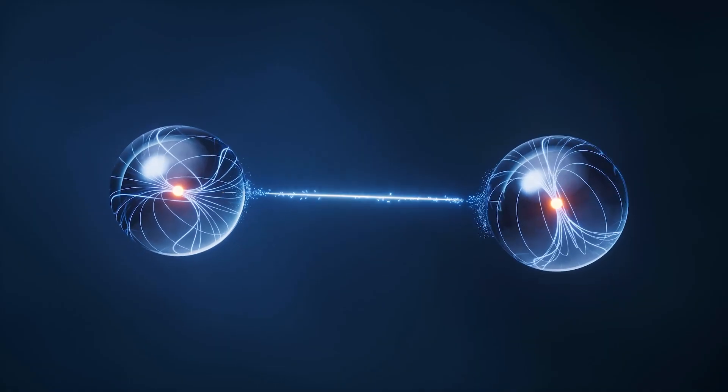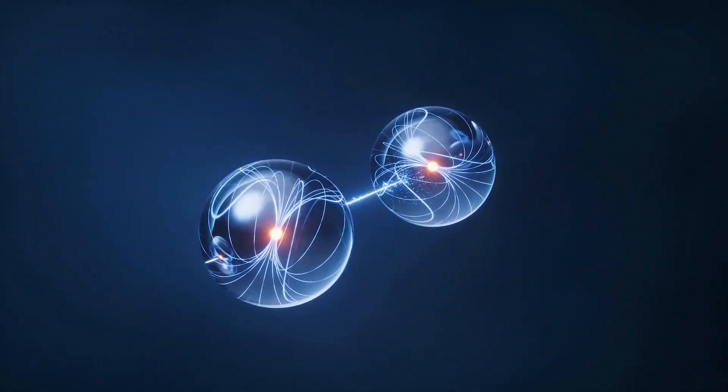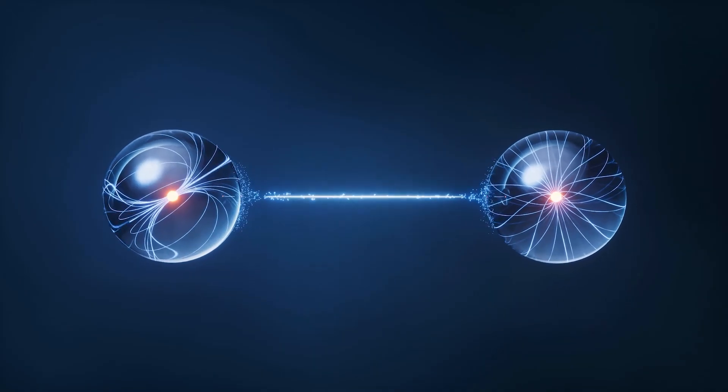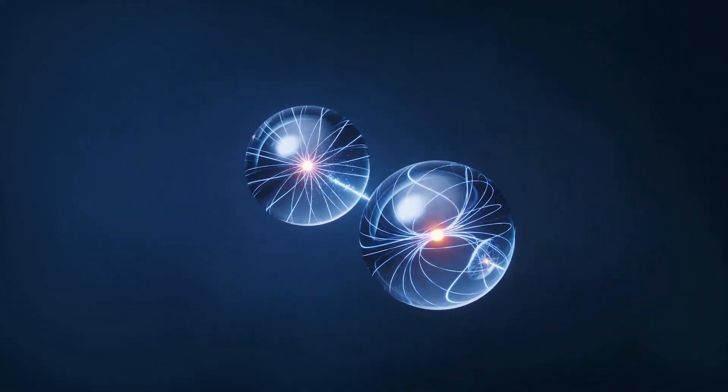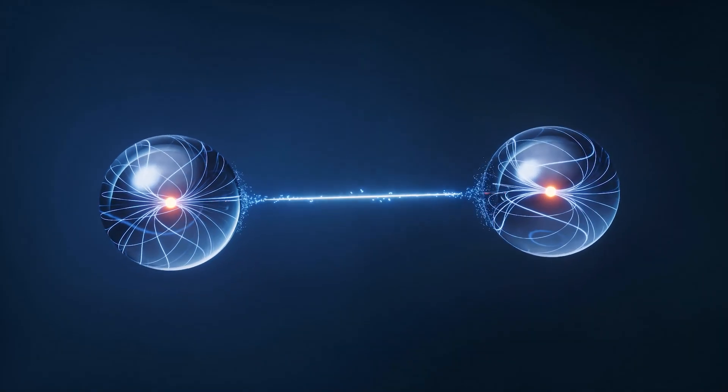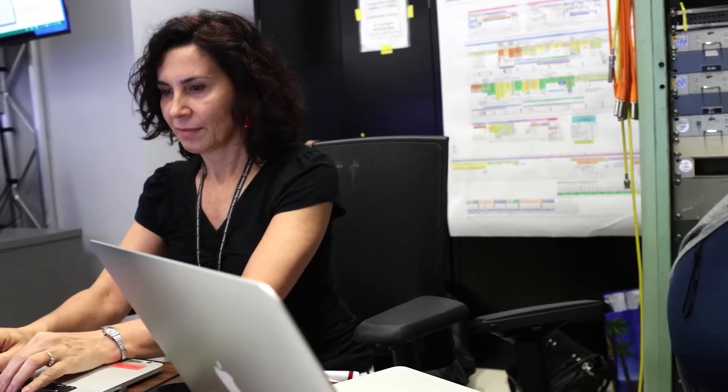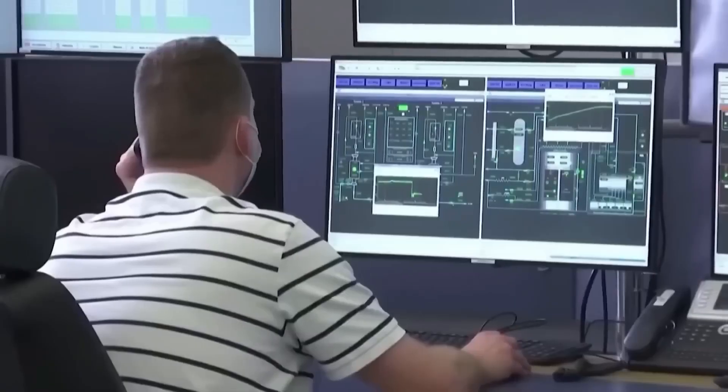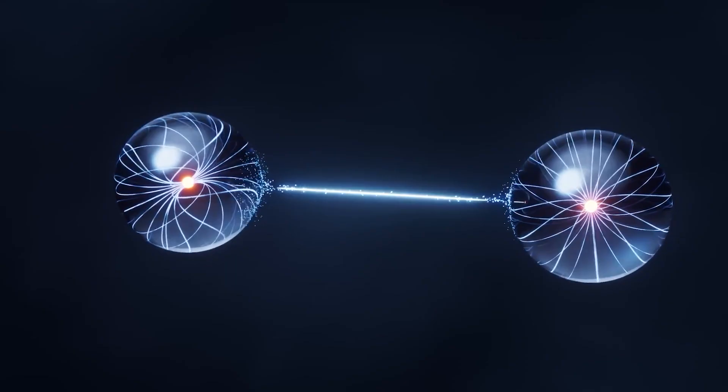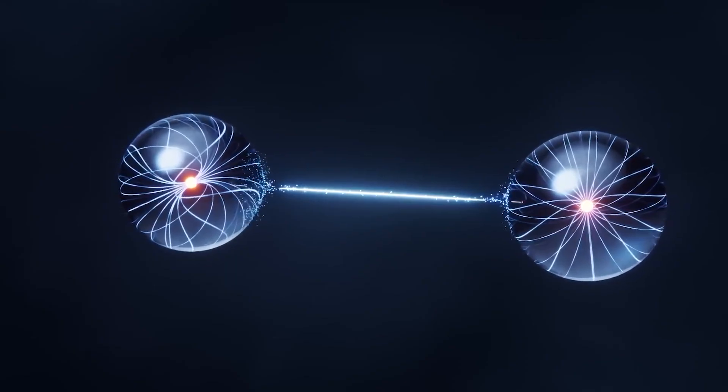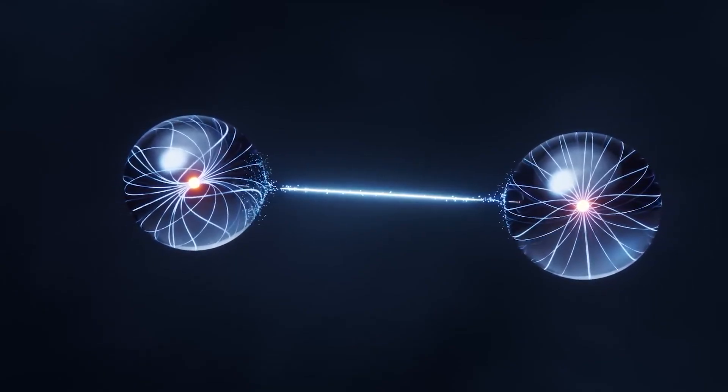It was the quantum afterimage. For a staggering 11 minutes, two identical, perfect quantum states existed at the same time, miles apart. One at the destination, and a ghost back at the source. The unbreakable no-cloning theorem, the very foundation of quantum security, had just been shattered.